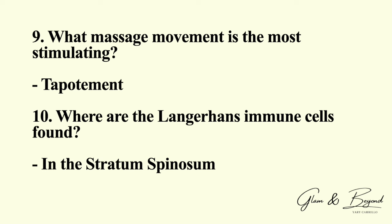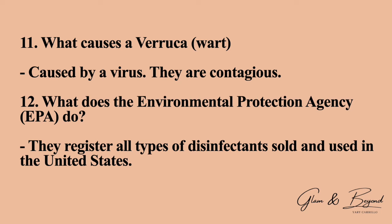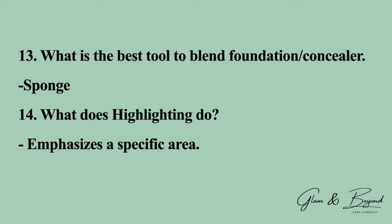Number ten: where are the Langerhans immune cells found? They are found in the stratum spinosum. Number eleven: what causes a verruca, also known as a wart? The answer is it is caused by a virus and they are contagious. Number twelve: what does the Environmental Protection Agency, also known as the EPA, do? They register all types of disinfectants sold and used in the United States. Number thirteen: what is the best tool to blend foundation or concealer? The answer is a sponge.